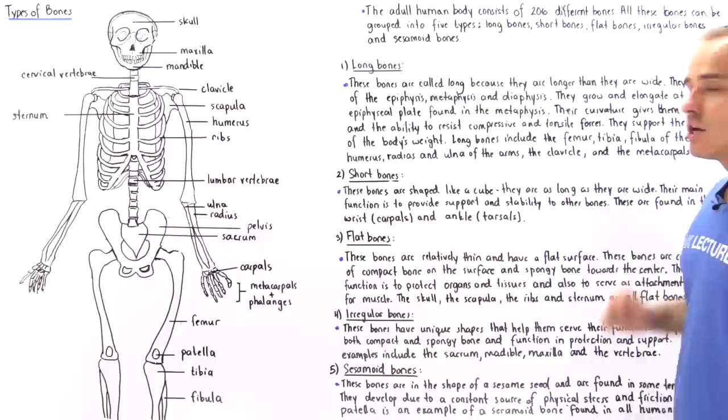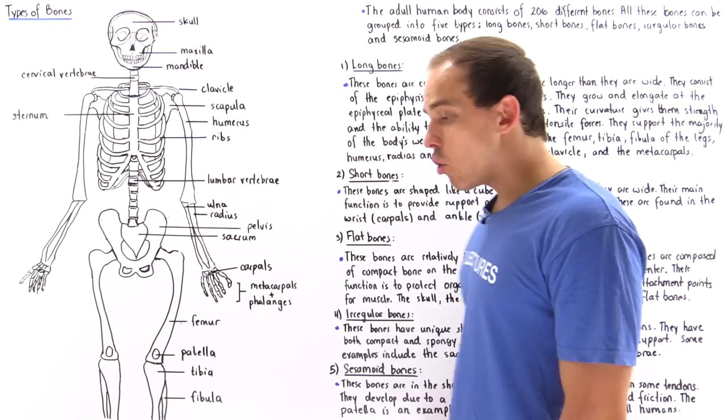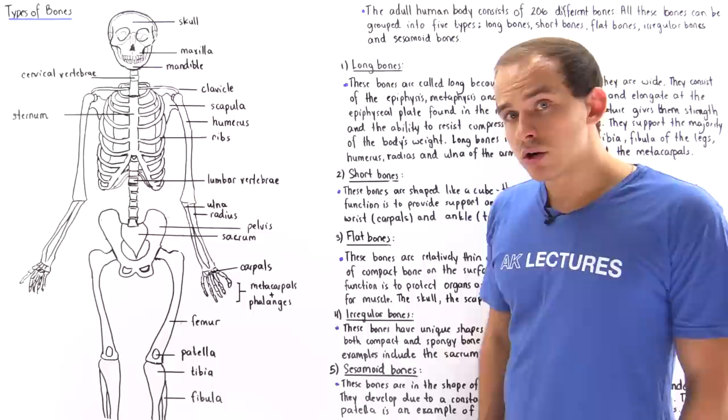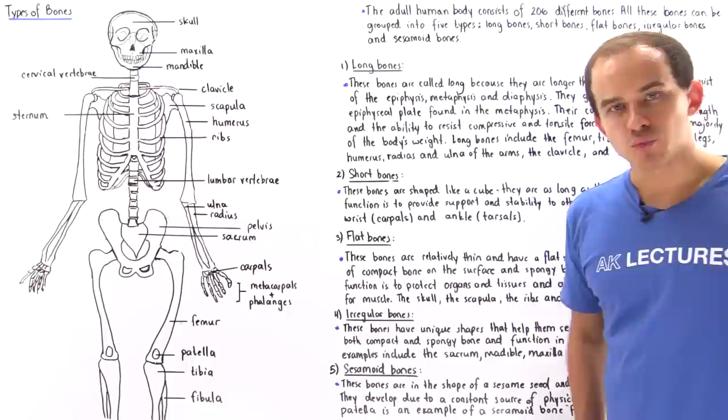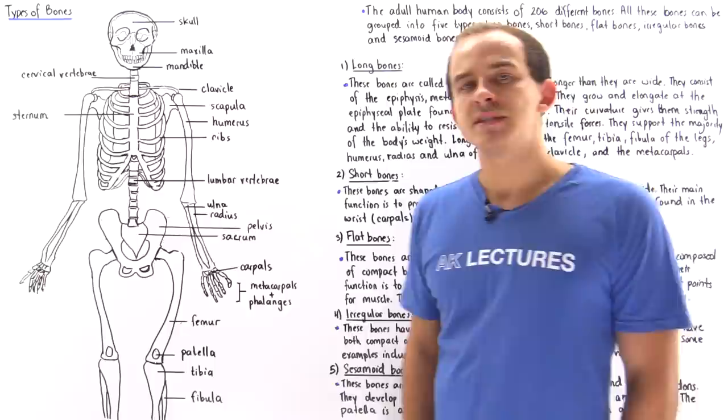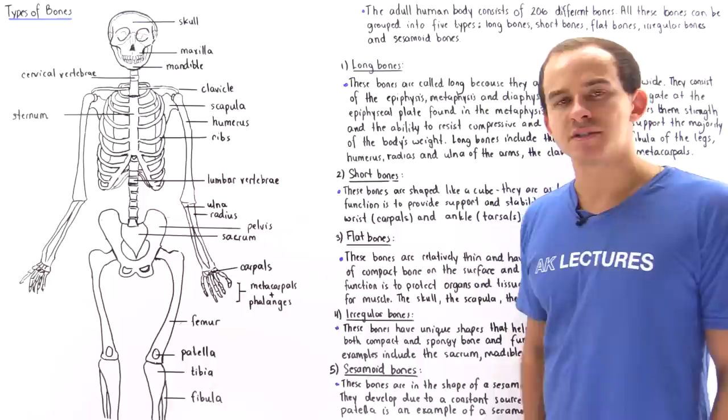Let's begin with the long bone. The long bone is called the long bone because they are much longer than they are wide. The long bone consists of three different sections: the epiphysis, the metaphysis, and the diaphysis. The epiphysis contains spongy bone, also known as cancellous bone, and this contains red bone marrow that synthesizes red blood cells.